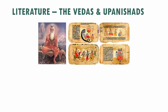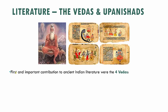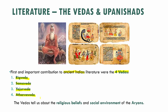First we have the Vedas. The Vedas are the first and most important contribution to ancient Indian literature, and we have four Vedas: Rigveda, Samaveda, Yajurveda, and Atharvaveda. These Vedas tell us about the religious beliefs of people and the social environment in which the Aryans lived.